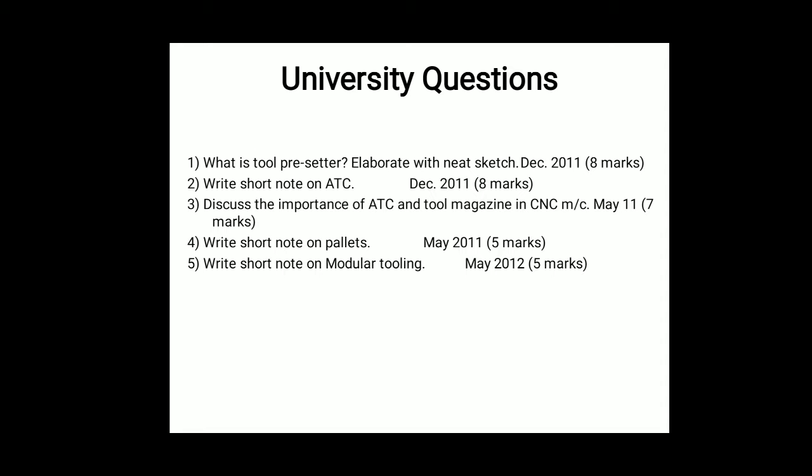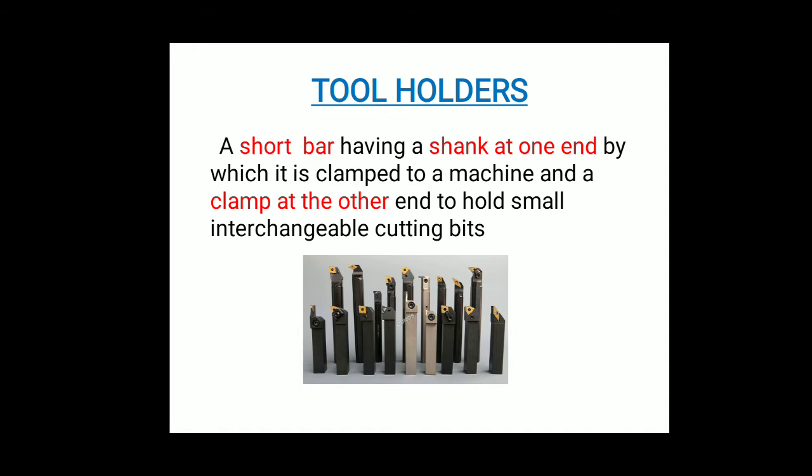The first point is the tool holder. A tool holder is a unit which carries a particular tool for the operation. It is a short bar having a shank at one end by which it is clamped to the machine, and at the second end it clamps small interchangeable cutting tools. Basically, we use this tool holder for holding the tool during machining operations.